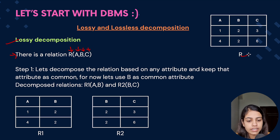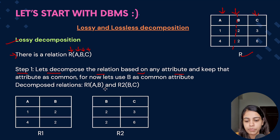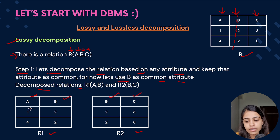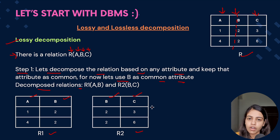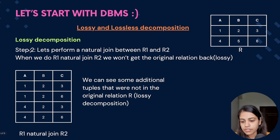Let's understand lossy decomposition with an example. Consider a relation R having attributes A, B, and C. In step one, we decompose the relation based on an attribute — we choose B as the common attribute. The decomposed relations are R1 having A and B, and R2 having B and C. The values remain the same: A is 1 and 4, B is 2 and 2, C is 3 and 6. B is the common attribute present in both R1 and R2.